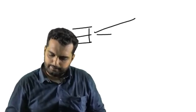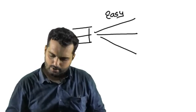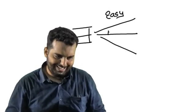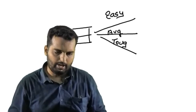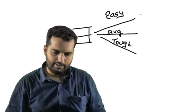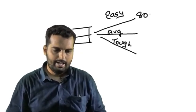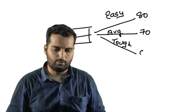Please look at the board now. Ideally speaking, we can have three outcomes. The paper can be easy or the paper can be average or the paper can be tough. If the paper is easy, let us say you can score around 80. Average, you can score around 70. Tough, you can score around 60.